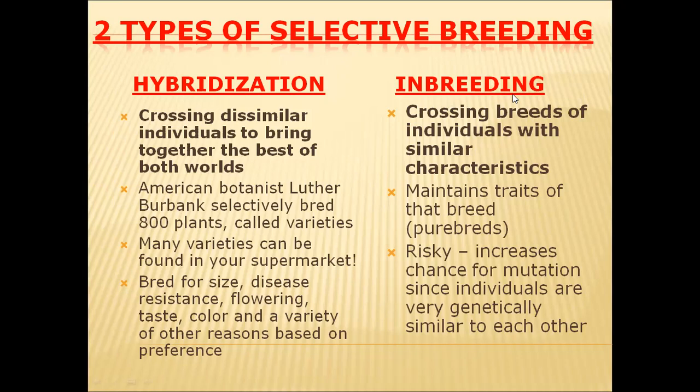Another type of selective breeding is inbreeding. In inbreeding, the organisms crossed with each other not only belong to the same species but are closely related — their bloodline is very close. They have similar characters and similar gene lines, being genetically very close to each other. Inbreeding is done to maintain the traits of a particular breed and to maintain the pure breed condition.